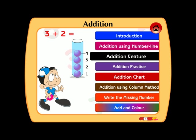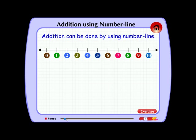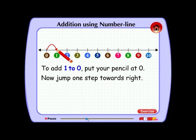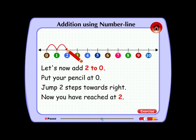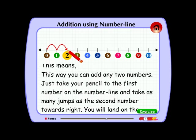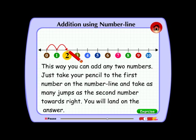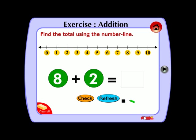Addition. Now you have reached at 2. This means 0 plus 2 equal to 2. This way you can add any two numbers. Just 8 plus 2 is equal to. It's correct.